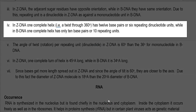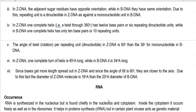In Z-DNA, one complete helix (360 degree twist) has a total of 12 base pairs or 6 repeating dinucleotide units, whereas in B-DNA one complete helix is made up of only 10 base pairs or 10 repeating units. The angle of twist per repeating unit is 60 degrees for a dinucleotide in Z-DNA, whereas it is 36 degrees for the mononucleotide in B-DNA. One complete turn of Z-DNA helix is 45 Angstroms long, whereas in B-DNA it is only 34 Angstroms.